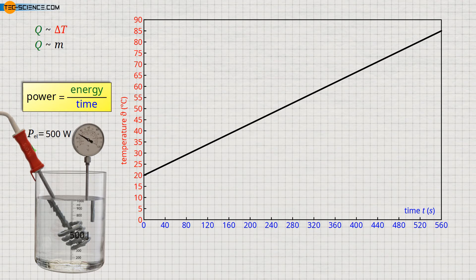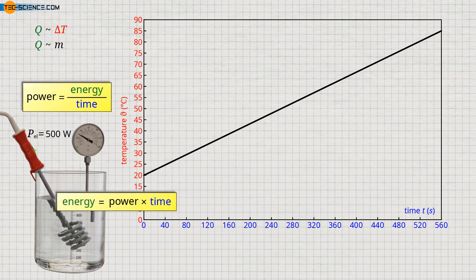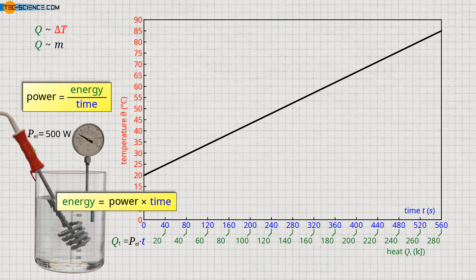Note that the electrical energy of the immersion heater is completely converted into heat, and thus the heating power corresponds to the electrical power. So, after we have recorded the course of the temperature at constant heating power, we can now convert the time axis in the diagram into a heat axis by multiplying the time by the heating power. In this way, we obtain at each point in time the total heat supplied up to that point. This heat energy is ultimately responsible for the corresponding temperature change. Note that we express the heat in the unit kilojoules because of the large values.